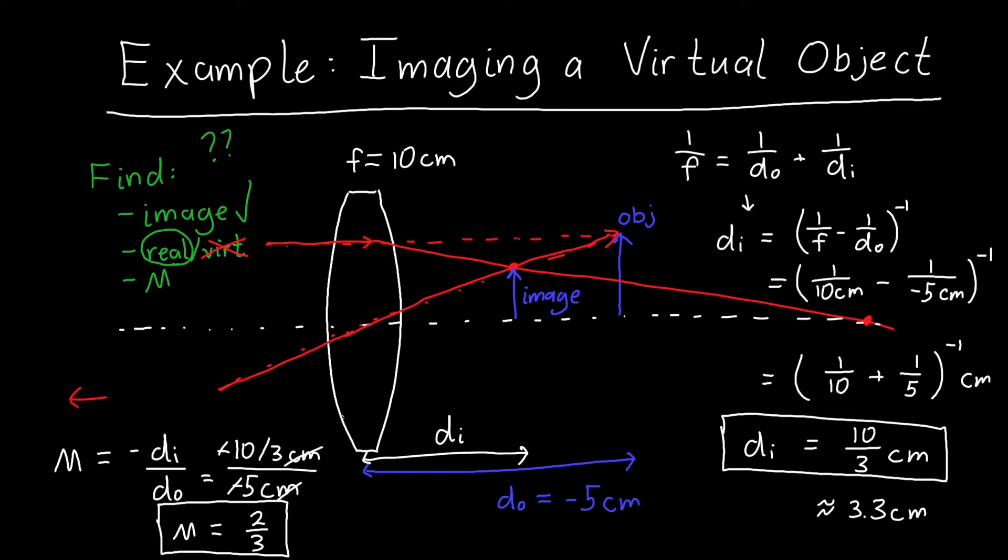So we have now everything that we were looking for: the magnification, the location of the image, and whether the image was real or virtual. And we did it by choosing rays - rays that looked like they were going to converge at the object if I were looking at it from the left, but they don't actually converge at the object. And that's where our image is formed. So this is how we deal with virtual objects.